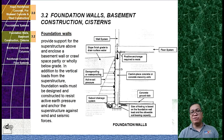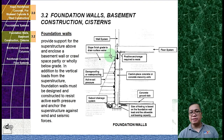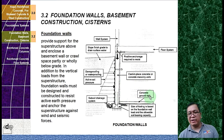Let's move into foundation walls or basement construction. Foundation walls provide support for the superstructure above and enclose a basement or crawl space partly or wholly below grade. In addition to vertical loads from the superstructure, foundation walls must be designed and constructed to resist active earth pressure and anchor the superstructure against wind and seismic forces. The foundation wall receives damp proofing or waterproofing and also receives active soil pressure from the outside. There is a sub-soil drainage system, and the wall must be anchored to the floor system and wall system. The size of the footing is based on the foundation wall load and the allowable soil bearing capacity.